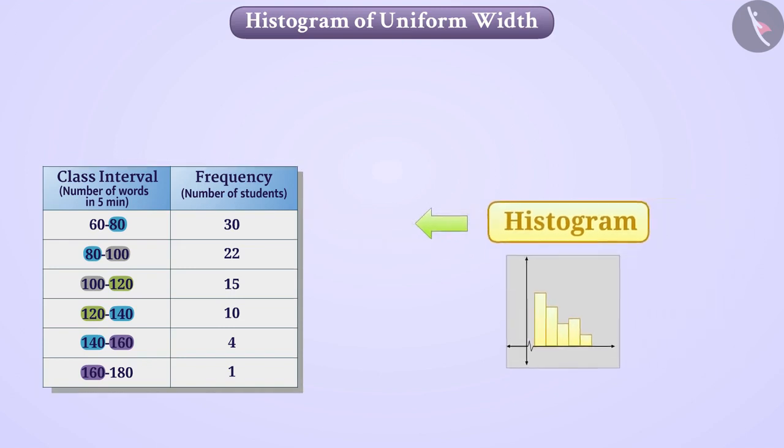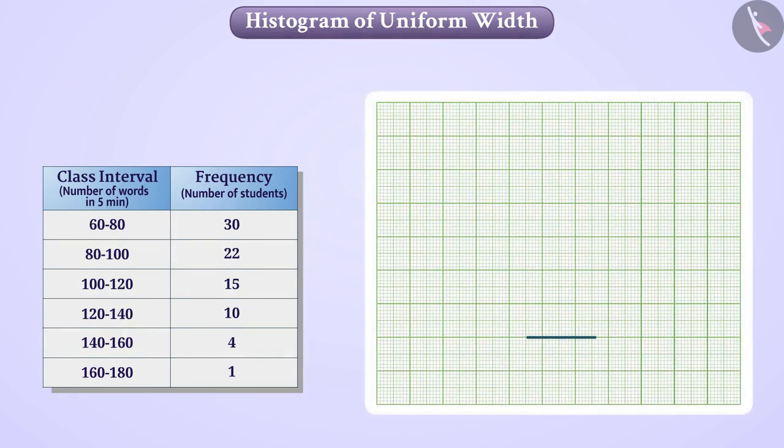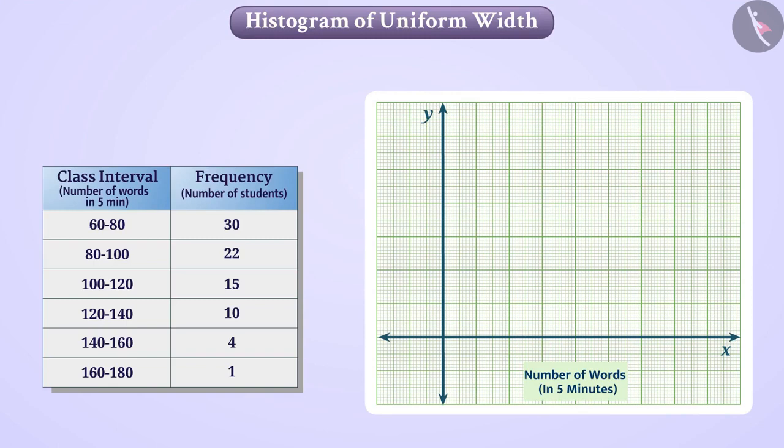First draw the x-axis and y-axis on the graph. On the x-axis we will take the number of words typed in five minutes and the number of students on the y-axis. Here, the class width of all class intervals is the same, which is 20 words.